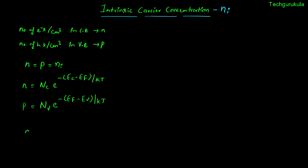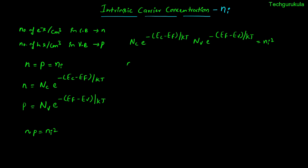To find Ni, we use N times P equals Ni squared. Substituting, this becomes Nc times e^(-(EC - EF)/KT) times Nv times e^(-(EF - EV)/KT), which equals Ni squared. We can write Ni squared equals Nc times Nv times e to the power of minus (EC minus EF plus EF minus EV) over KT. The minus EF and plus EF terms cancel, leaving Ni squared equals Nc times Nv times e to the power of minus (EC minus EV) over KT.